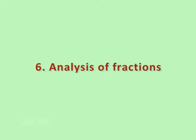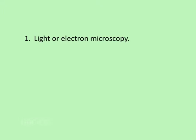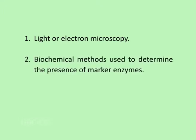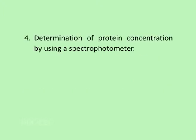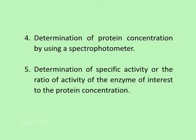The next step is the analysis of fractions. This step is needed to identify and quantify the purified fractions for successful downstream applications. The fractions can be analyzed by the following methods: first, by light or electron microscopy; secondly, by biochemical methods used to determine the presence of macroenzymes; thirdly, by assay for a protein marker with an antibody by western blotting; and fourthly, by determination of protein concentration using a spectrophotometer, or by determination of specific activity — that is, the ratio of activity of the enzyme of interest to the protein concentration.